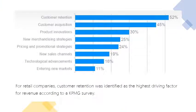This slide shows the KPMG survey result, which compares several variables. The graph shows that customer retention was identified as the highest driving factor for revenue. Variables in the survey include customer retention, customer acquisition, product innovations, new merchandising strategies, pricing and promotion strategies, new sales channels, technological advancement, and entering new markets. Out of these variables, customer retention secured the top position for revenue improvement, followed by customer acquisition in second place and product innovations in third.